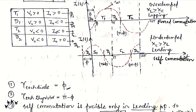Now we will see the conduction of the diode. Diode D1 conducts from 0 to phi in the lagging load case, and in the leading load case it also conducts for an angle of phi. So each diode conducts for an angle of phi. For the thyristor conduction angle: thyristor T1 (switch S1) conducts from phi to pi, which is a duration of pi minus phi. So each thyristor conducts for an angle of pi − phi.